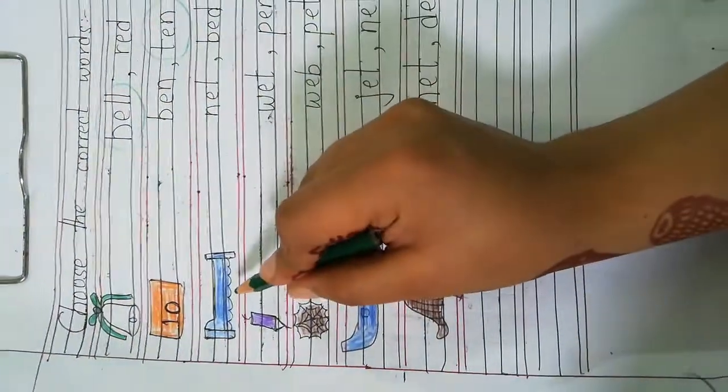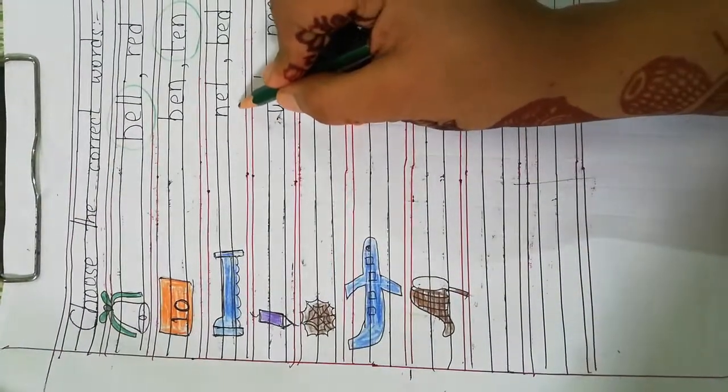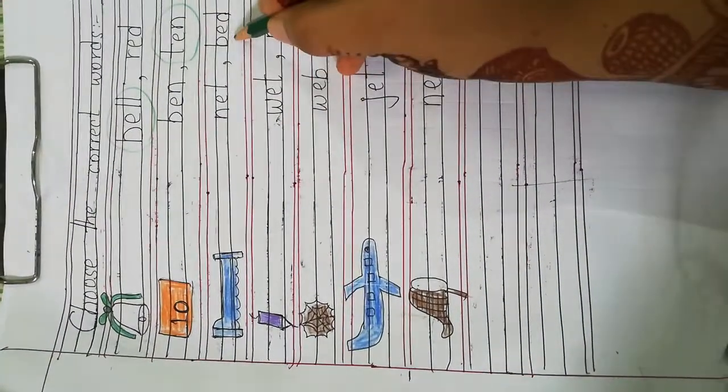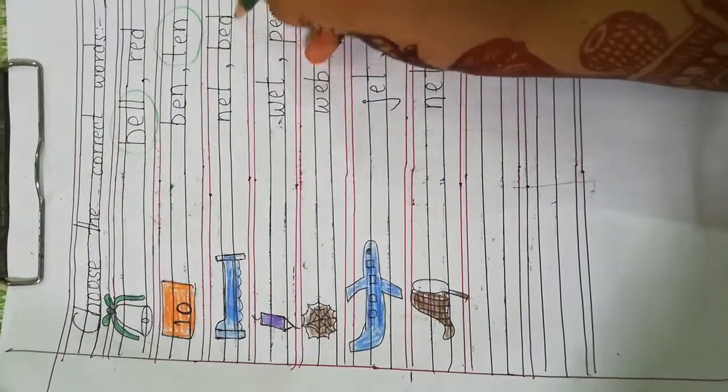Now, next one is bed. B E D bed. N E D net. B E D bed. So, this is bed. So, we will circle this word.